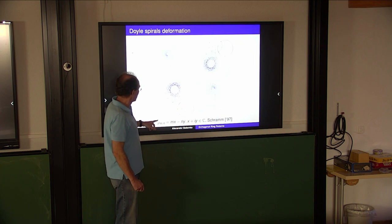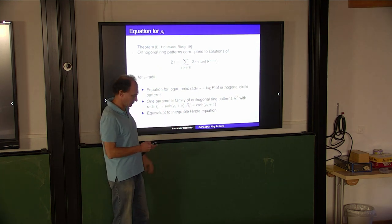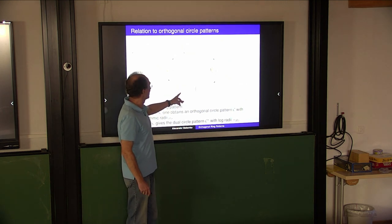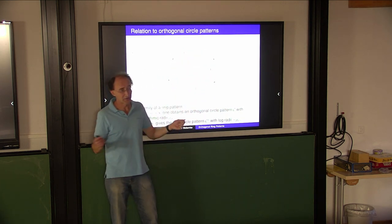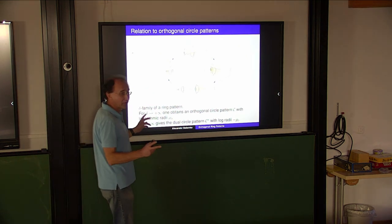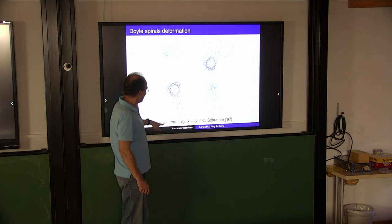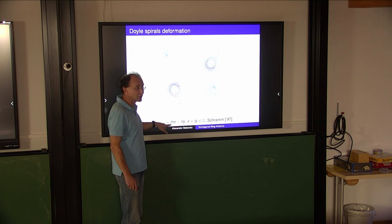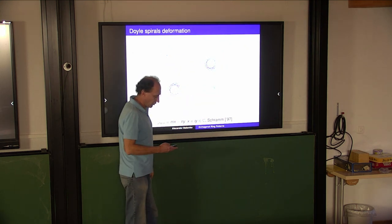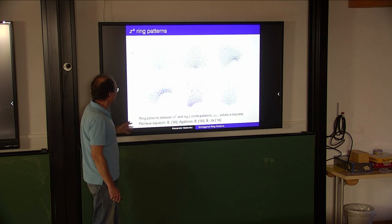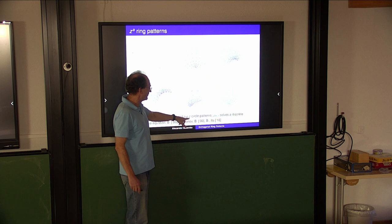Let us look at this delta-family, where delta is the parameter of shift for all rho values. You start with a circle, you get a ring, and you have two different limits - both of them are circle patterns. Here is an example: a spiral corresponding to this simple solution of the Hirota equation, and this gives the whole family. Or a more complicated thing: this is a ring pattern between discrete holomorphic circle patterns corresponding to z-squared and two log of z.